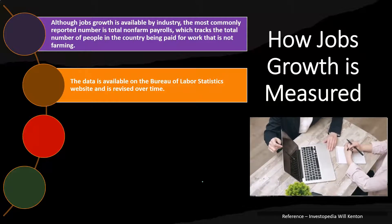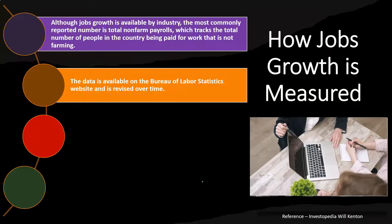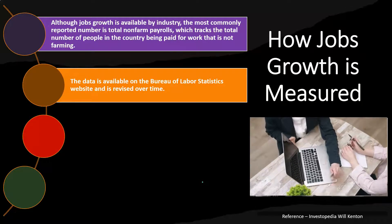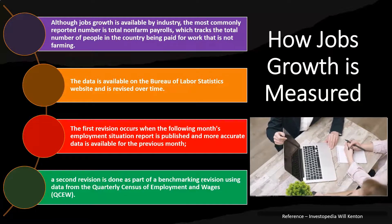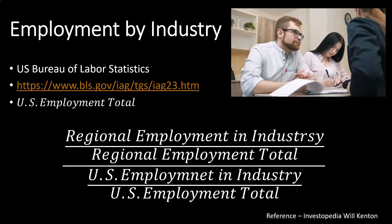You want to drill down deeper and pick up numbers on both the national and local side, then start digging into your comparisons from there — looking into industries and trends over time, comparing local trends to the national level. The first revision occurs when the following month's employment situation report is published and more accurate data is available for the previous month. A second revision is done as part of the benchmarking revision using data from the quarterly census of employment and wages. The U.S. Bureau of Labor Statistics is where you want to go to start digging into your data research with regards to the economic environment where you are thinking about investing, looking specifically at employment statistics — a huge economic indicator at both the regional and national level.